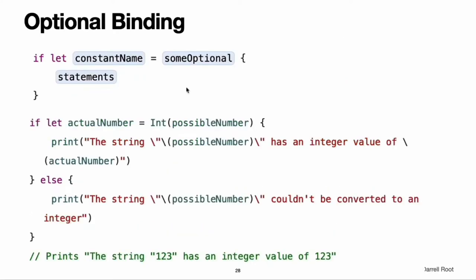You use optional binding to find out whether an optional contains a value, and if so, to make that value available as a temporary constant or variable. Optional binding can be used with if and while statements to check for a value inside an optional and to extract that value into a constant or variable as part of a single action. Write an optional binding for an if statement as follows: if let constantName = someOptional { statements }.